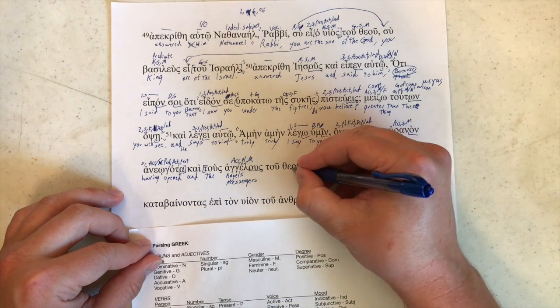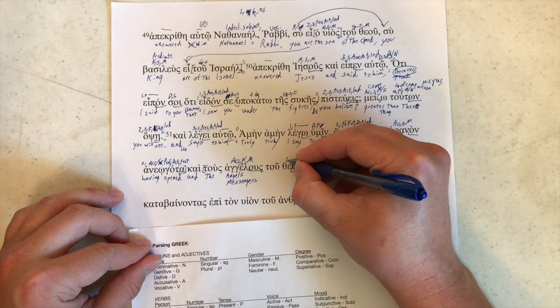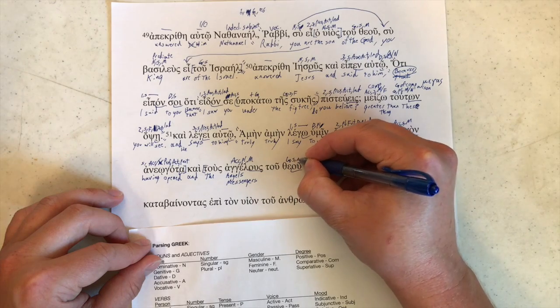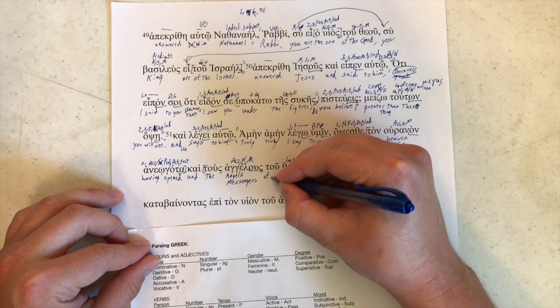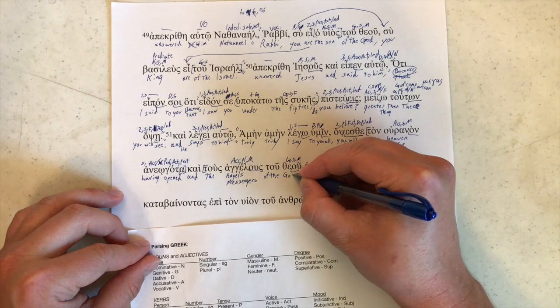Tou theou. Omicron, upsilon, there is of course genitive, singular, masculine. Of the god.